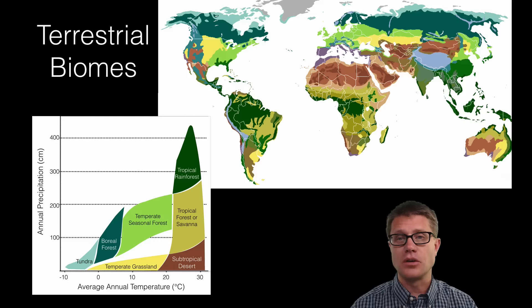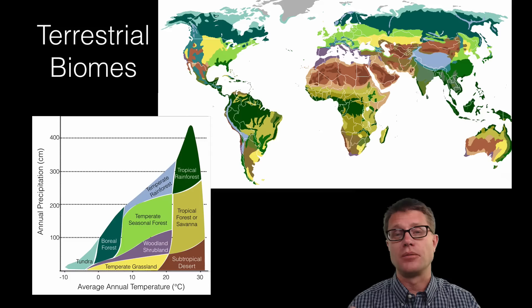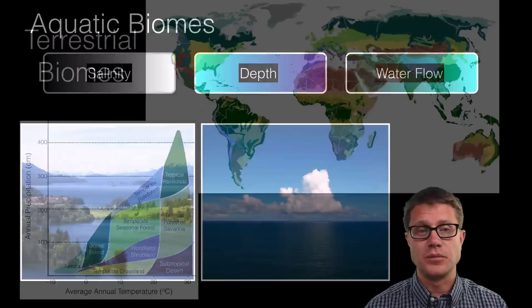We could fill in a couple of other ones. In the Mediterranean we are going to have woodland shrublands. We would have that over in California as well. And then if we go up here we will have these temperate rainforests where it is cooler but they receive tons of precipitation throughout the year. So you can see those are the major biomes.